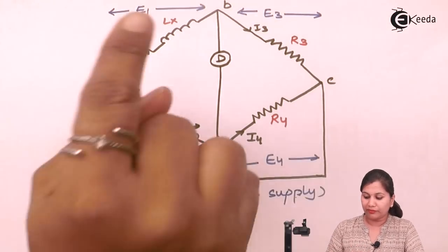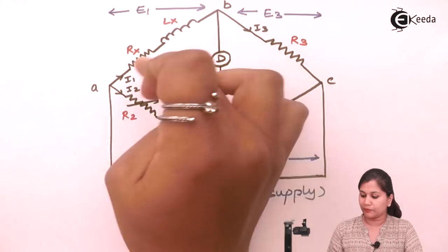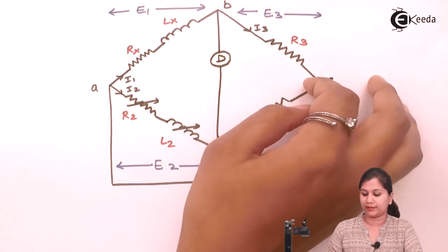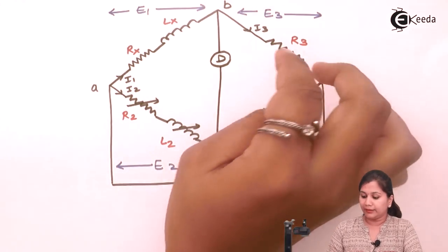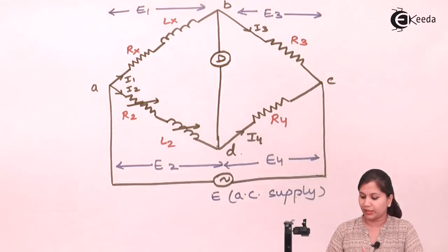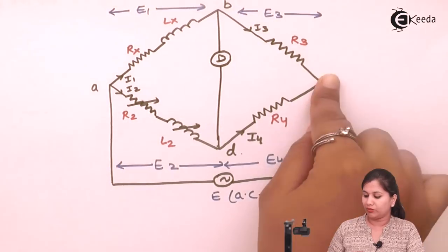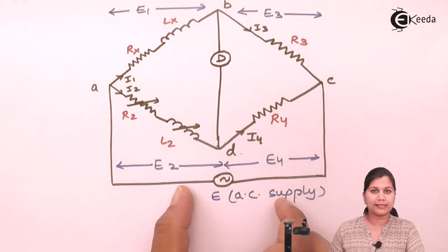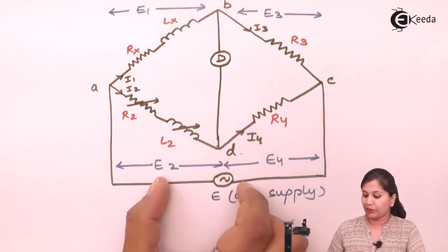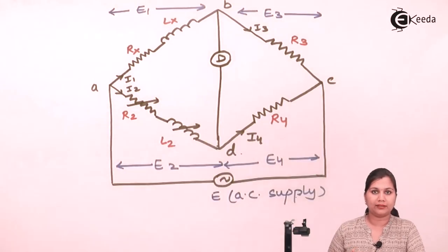We will find out the value of this unknown inductance in terms of the known parameters. The detector is used to obtain the balance condition of the bridge network, and between arm AC, the AC power supply is connected which operates the bridge network.